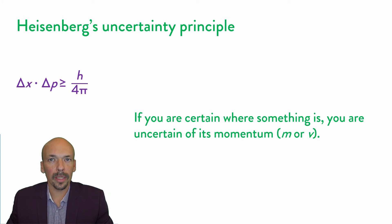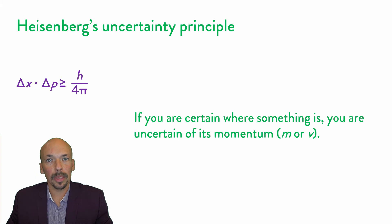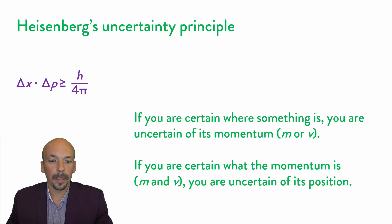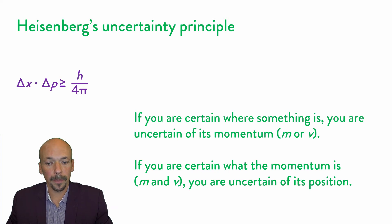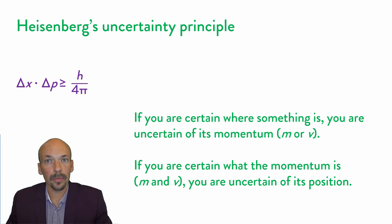If you are pretty sure where something is — though you can never be exactly sure, because then delta x would be zero — the uncertainty in velocity will increase, so you will not know what the velocity of that particle will be. The other way around: if you are almost certain about the momentum, so the mass and the velocity, then you are not certain anymore where this particle is. You know what the mass is, you know what the velocity is, but you will not know exactly where to find this particle.